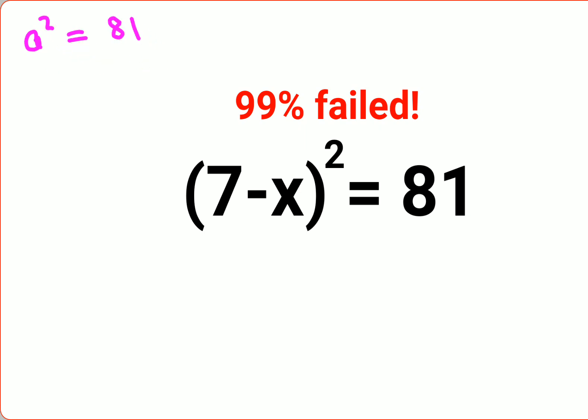Whenever you take square roots, especially if the number is equal to a variable, you need to put the plus minus sign. So here we will say a equals to plus minus 9. Using the same logic here also, I can say 7 minus x equals to plus 9 or 7 minus x equals to just minus 9.